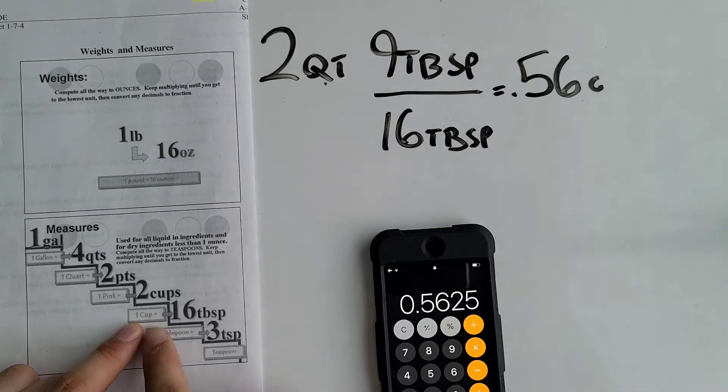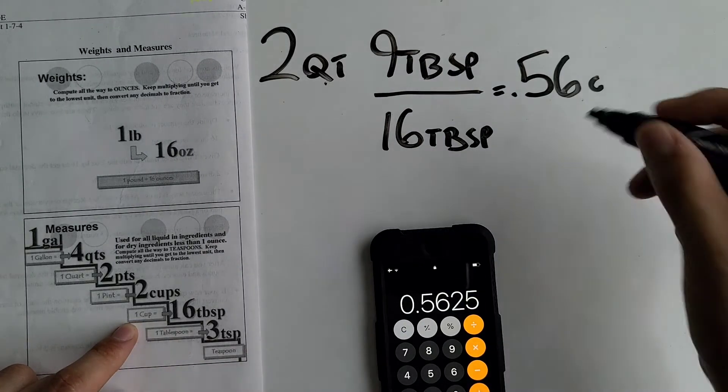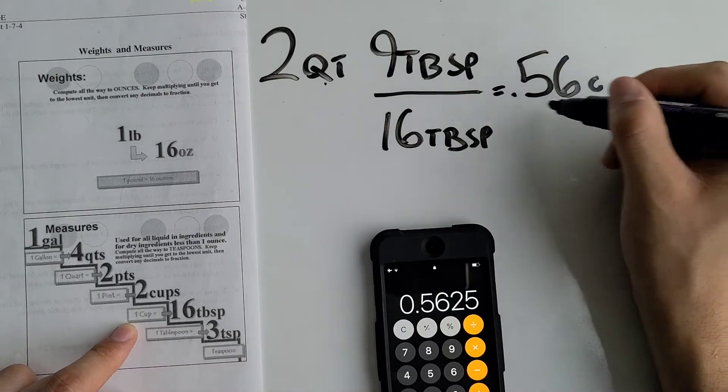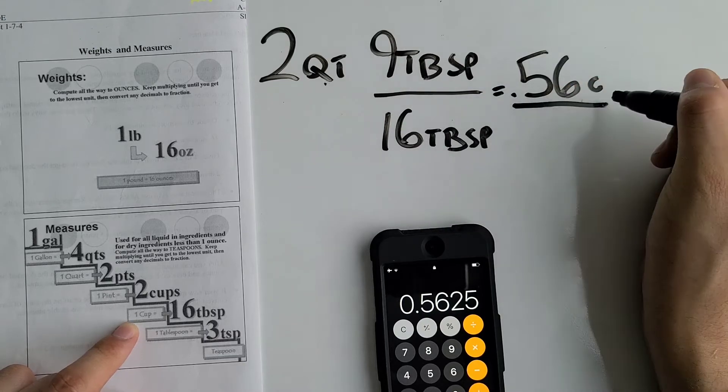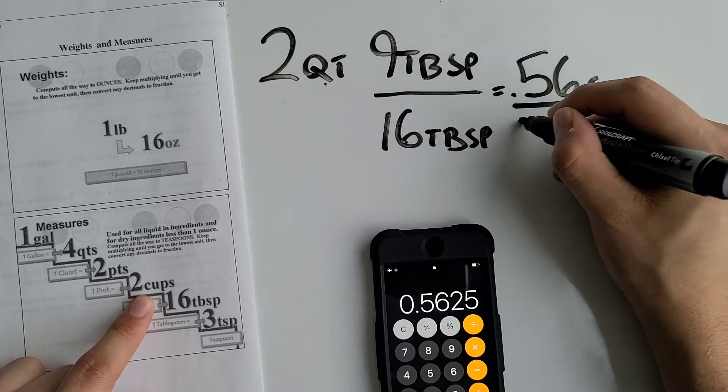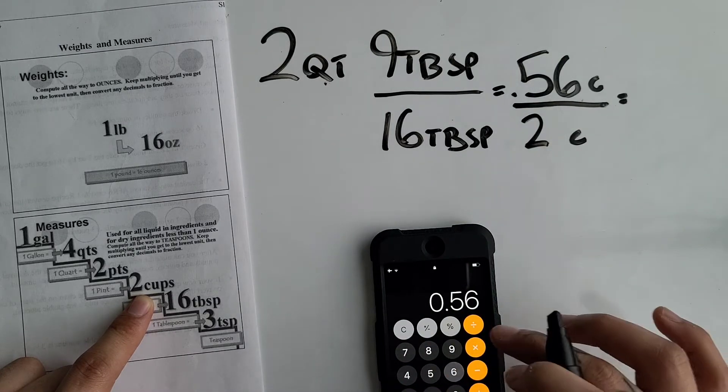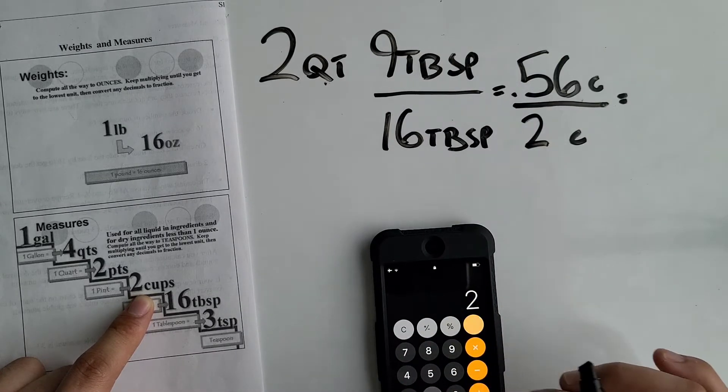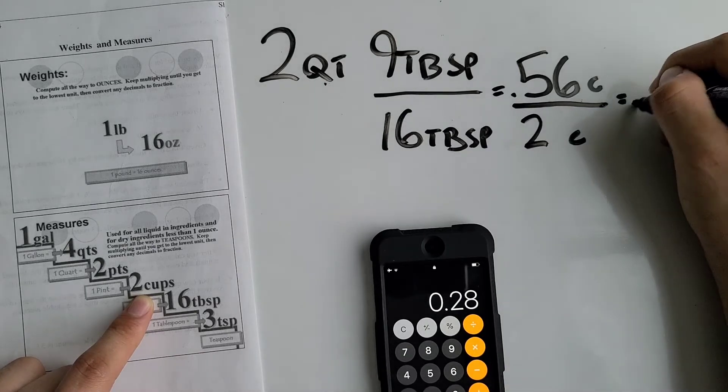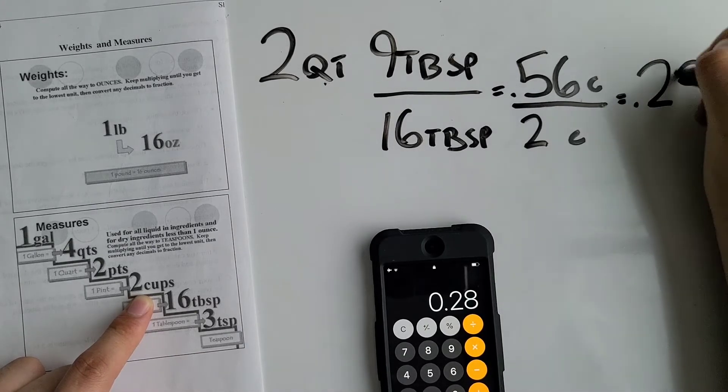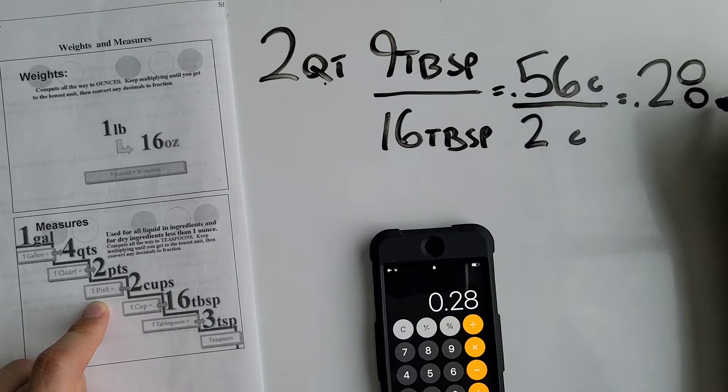Right now we're at cups but we're still not at quarts yet. We have to divide this by two cups. So 0.56 divided by two cups equals 0.28 pints.